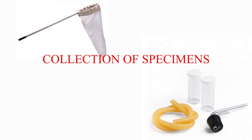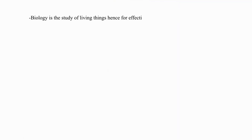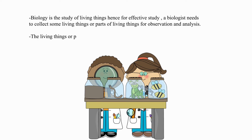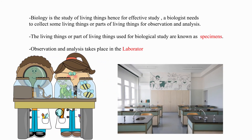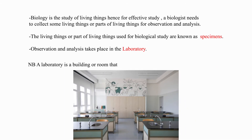Collection of specimens. Biology is the study of living things; hence, for effective study, a biologist needs to collect some living things or parts of living things for observation and analysis. The living things or parts of living things used for biological study are known as specimens. Observation and analysis takes place in the laboratory, which is a building or room that is designed and equipped for scientific studies.